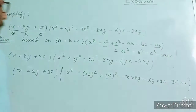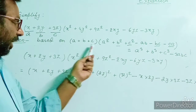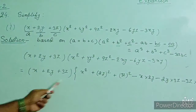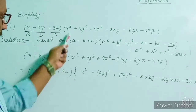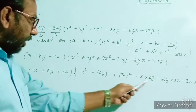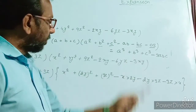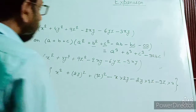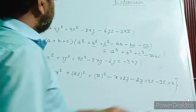Are you getting the expression back? We are getting x plus 2y plus 3z. You simplify this and check: x squared, (2y) whole square is 4y squared, (3z) whole square is 9z squared, minus 2xy, minus 6yz, minus 3zx. So we are getting the simplification of this expression matches the required form.